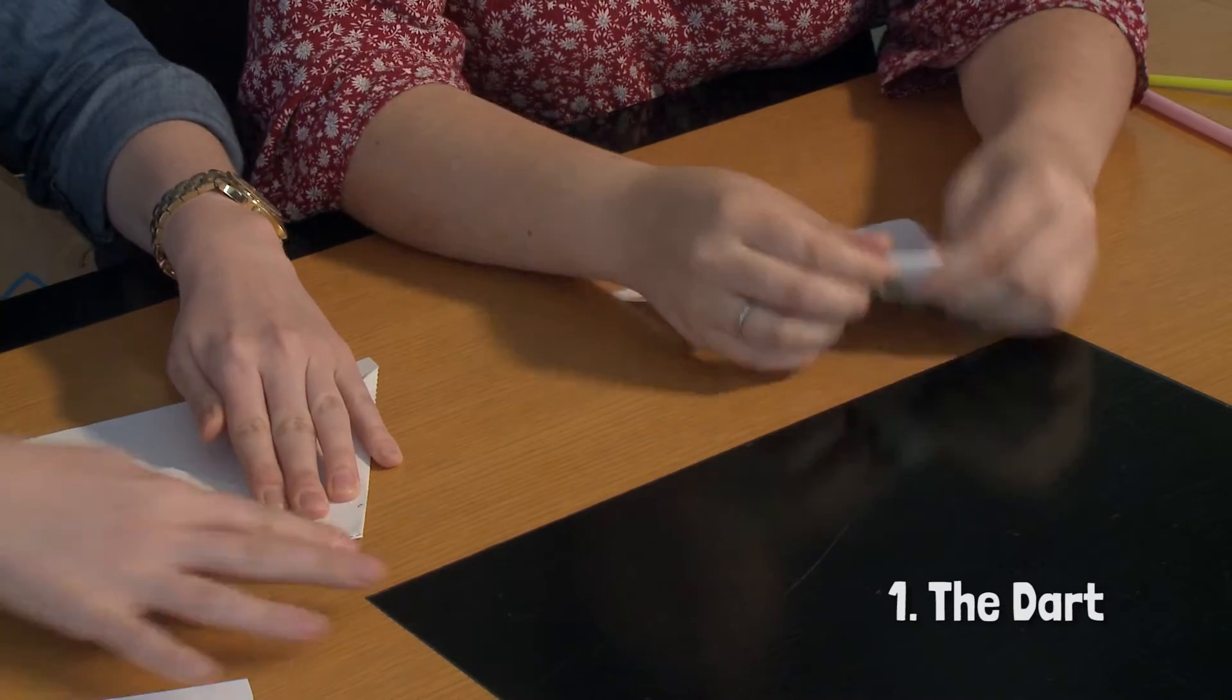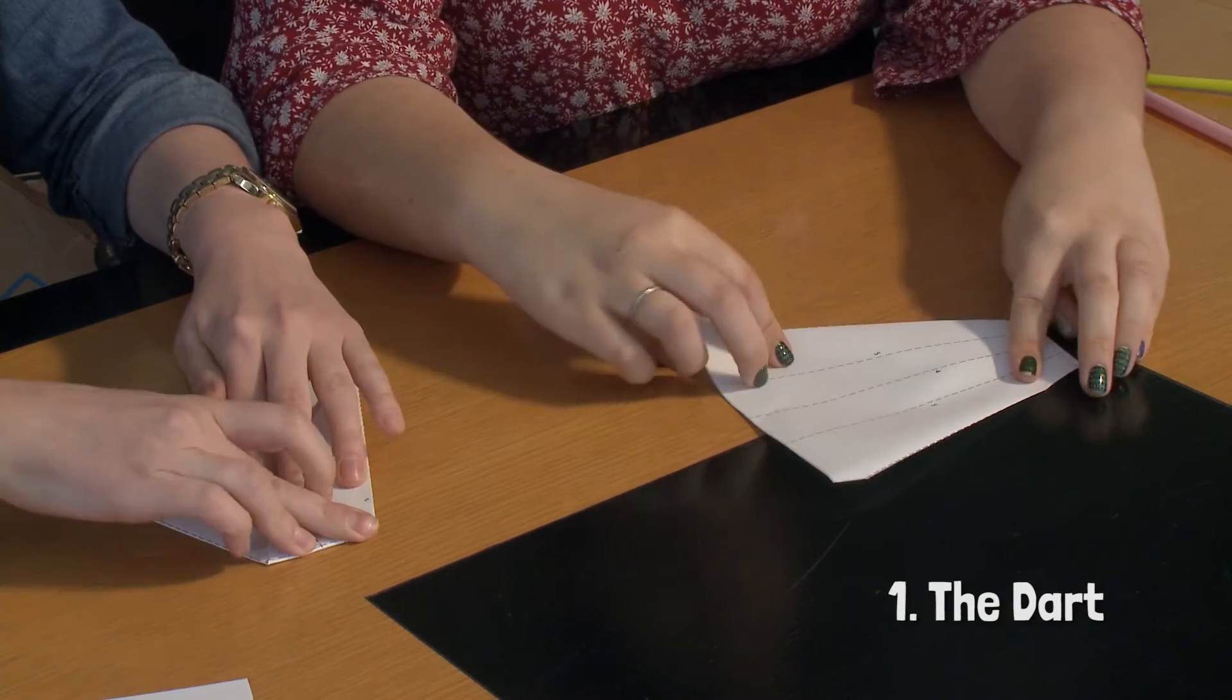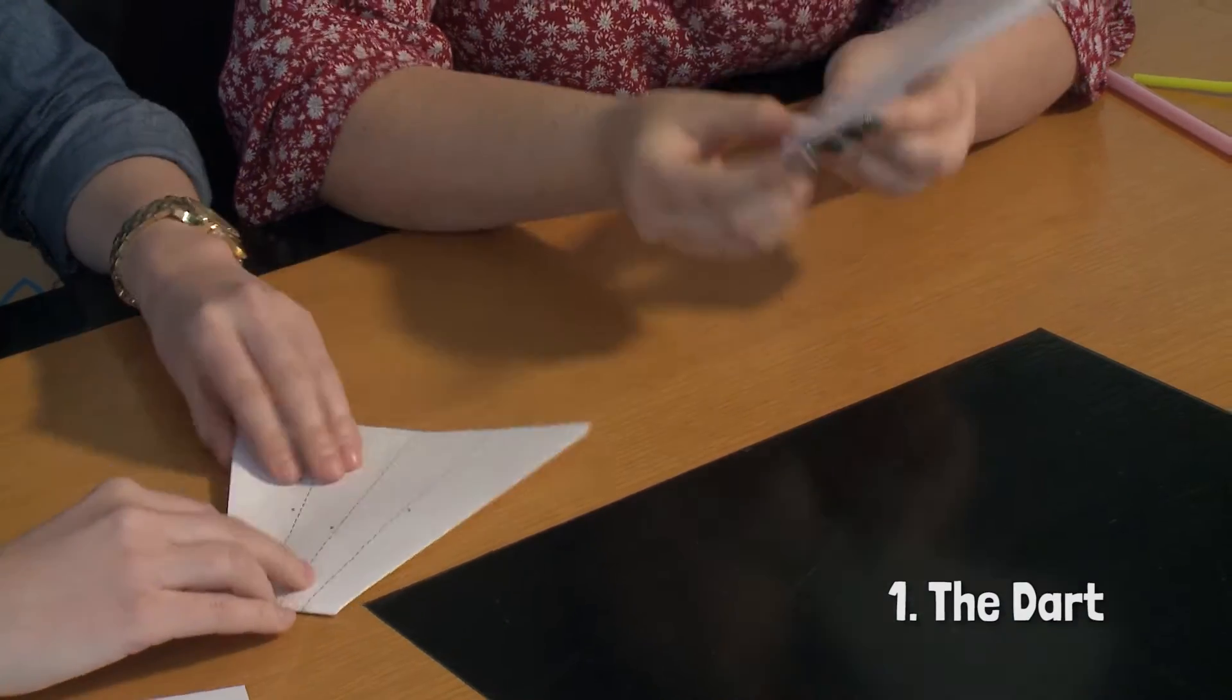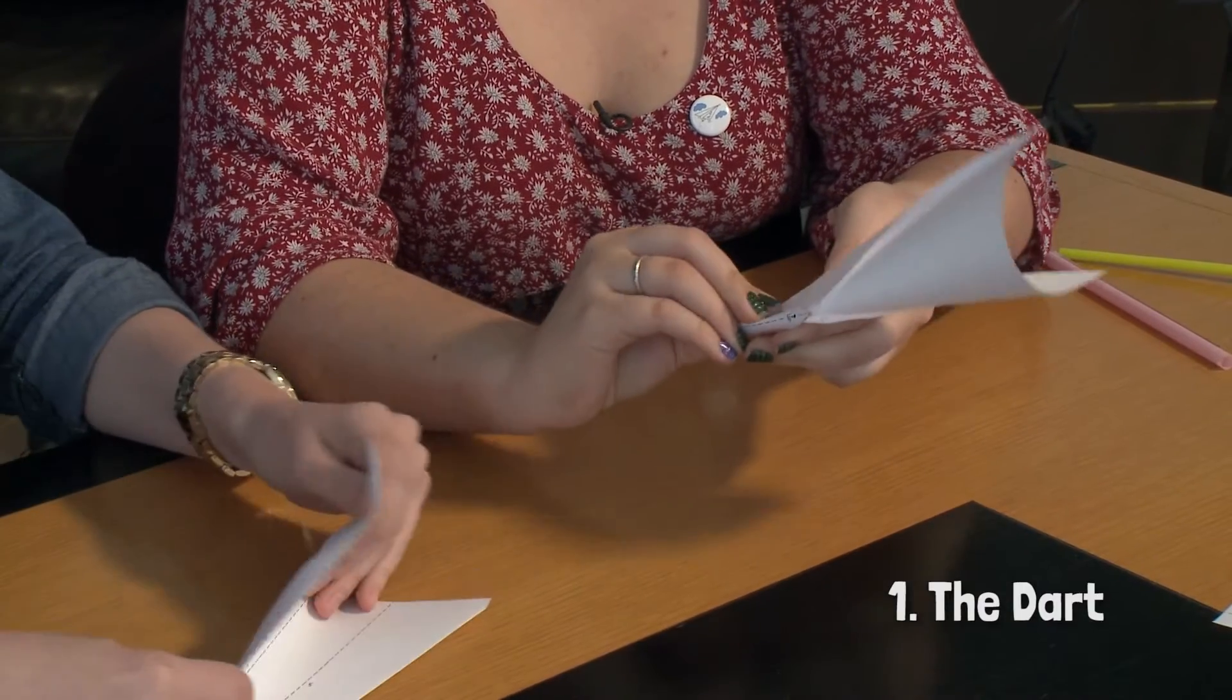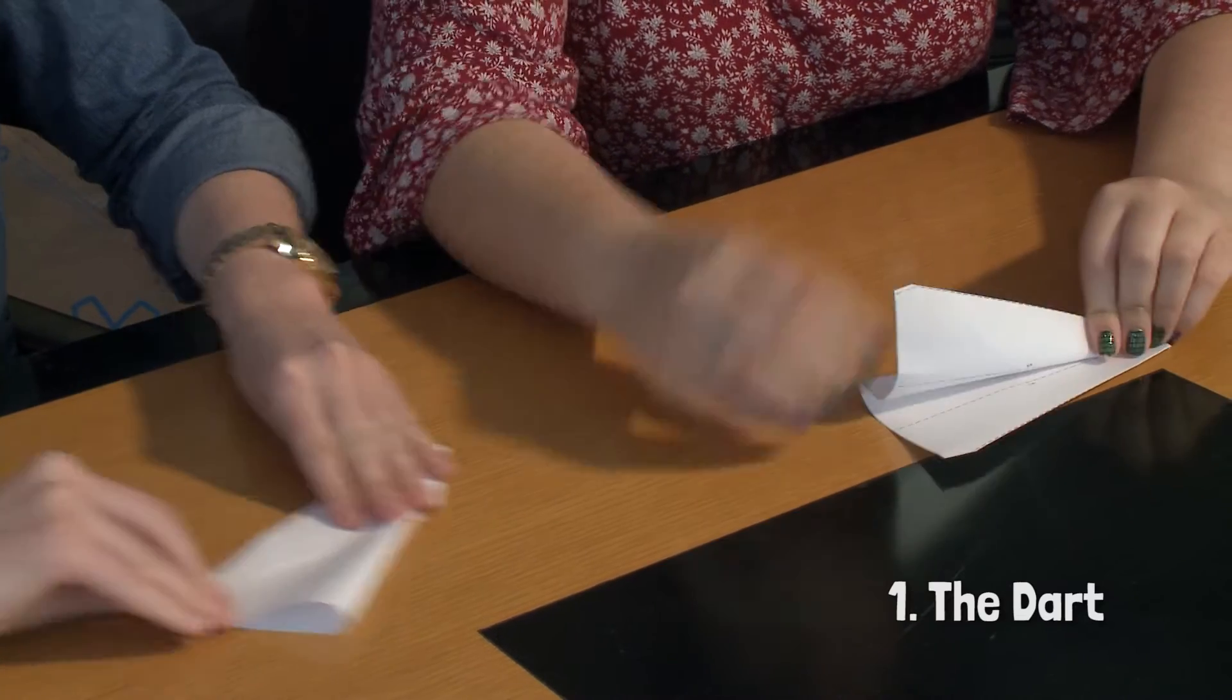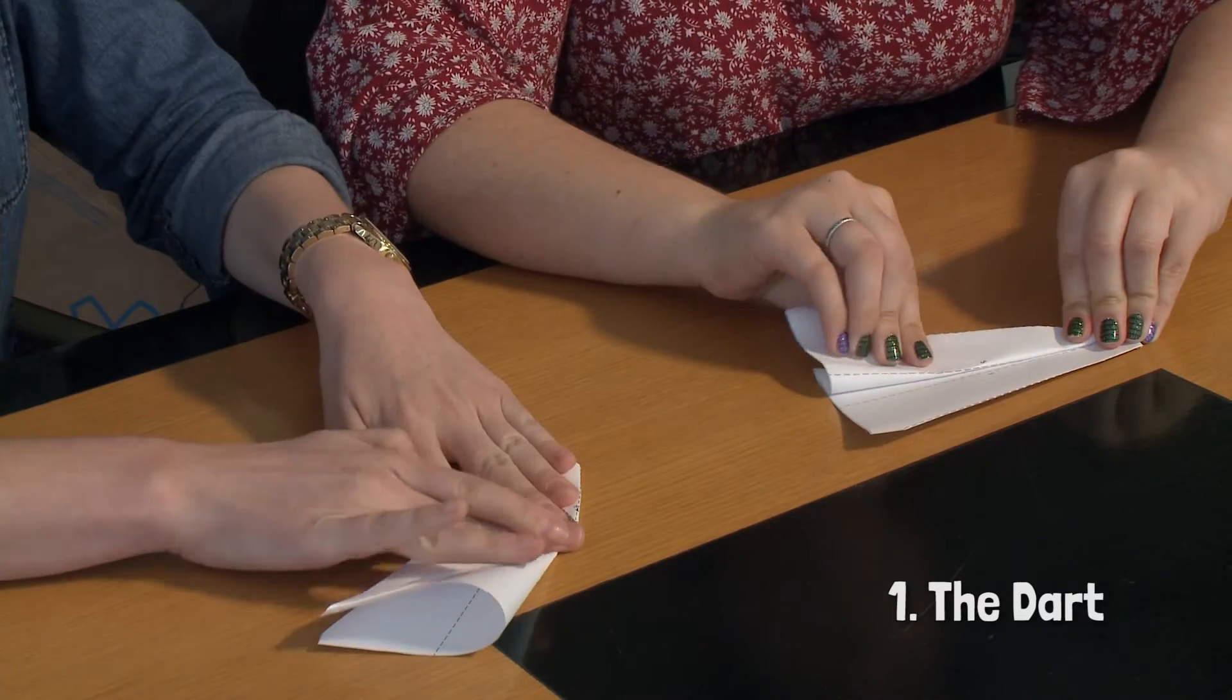All right. And then we're going to flip this over and we're going to fold it in half. And then we'll fold it down again until we see the winglets form.